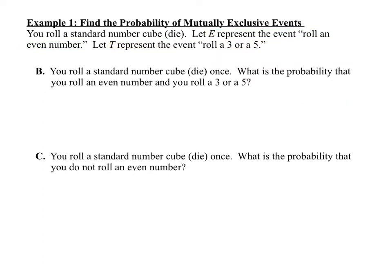This time we're going to roll the standard number cube once. What is the probability that you roll an even number and a 3 or a 5? Notice the word and — and is different from or. For and to occur, it needs to be both even and a 3 or a 5 at the same time. But how many numbers on a die are both even and 3 or 5? Zero. There are zero outcomes out of six possible outcomes, so the probability of that happening would be 0, or zero percent.